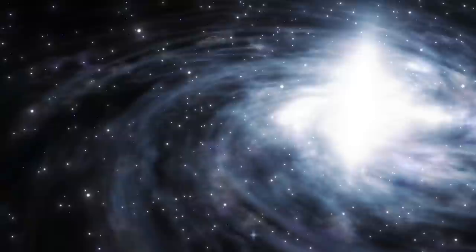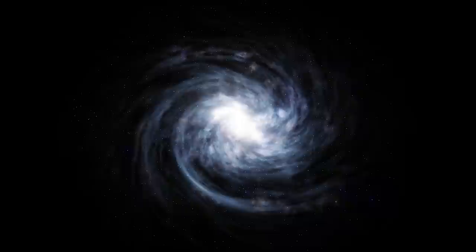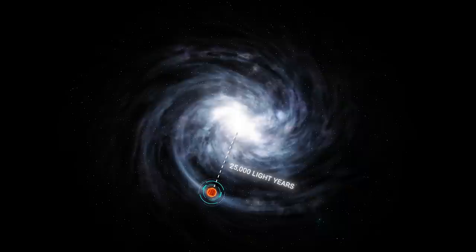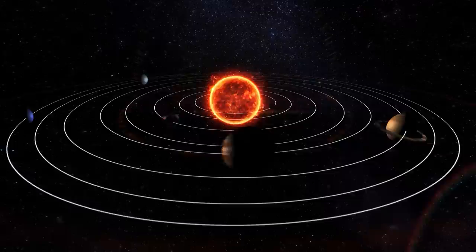This rotation makes the stars and gas in the galaxy move in circular orbits around the galactic center. Earth is located in one of the spiral arms of the galaxy, about 25,000 light-years from its center.